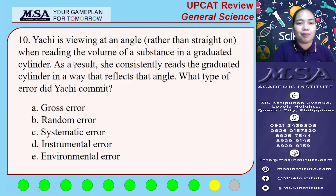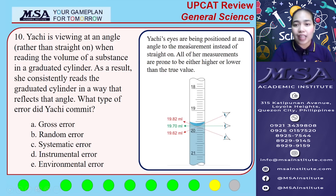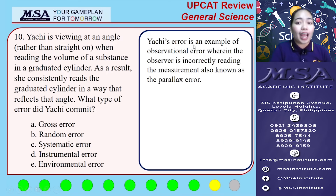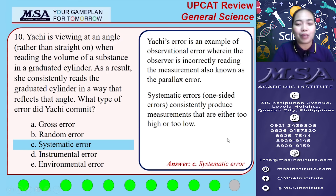Number ten: Yachi is viewing at an angle rather than straight on when reading the volume of a substance in a graduated cylinder. As a result, she consistently reads the graduated cylinder in a way that reflects that angle. Yachi's eyes are positioned at an angle to the measurement instead of straight on, so all of her measurements are prone to be either higher or lower than the true value. This is an example of observational error, wherein the observer is incorrectly reading the measurement — also known as parallax error. Systematic errors consistently produce measurements that are either too high or too low. The answer for number 10 is letter C.